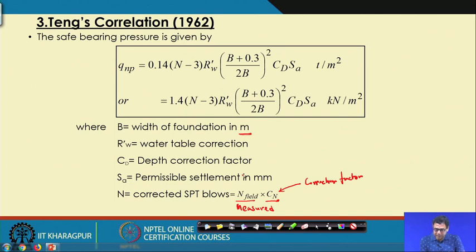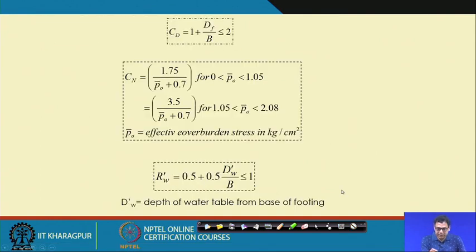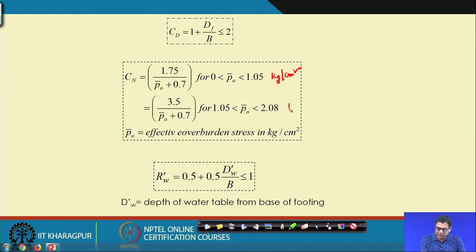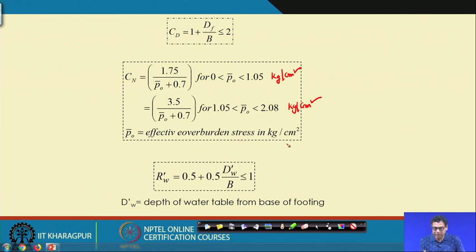CD is given by: 1 + Df/B, and CD cannot be greater than 2. The CN correction factor is given in terms of P0 — the effective overburden stress in kg per centimeter square — and applies when P0 is less than 1.05 kg/cm². This range is sufficient for a shallow foundation within the influence zone. Remember to follow the units: effective overburden stress must be in kg per centimeter square when using this expression.